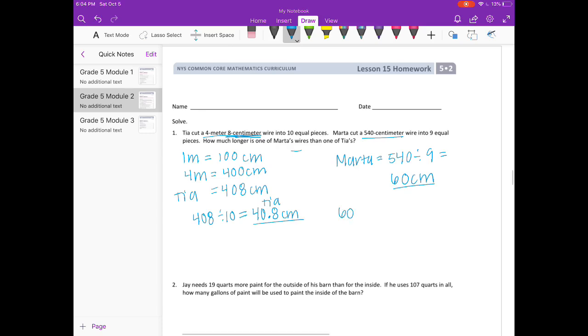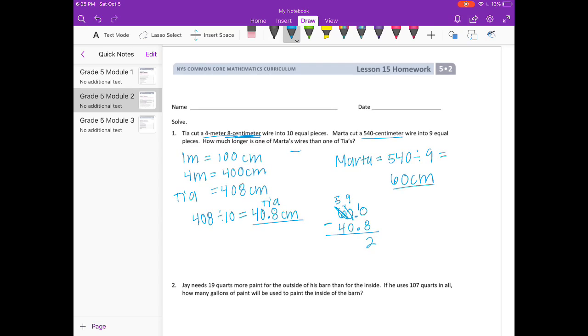We need to subtract 60 minus 40.8. It's really important that you line up your place values here. I added a 0.0 tenths to 60 so it'll make it easier for me. I can't do 0 minus 8, so I'm going to borrow all the way from the 6 and make it a 5, make this 10, borrow, make it a 9, this will become 10. 10 minus 8 is 2, 9 minus 0 is 9, and 5 minus 4 is 1. Bring our decimal point straight down, so we get 19.2 centimeters.